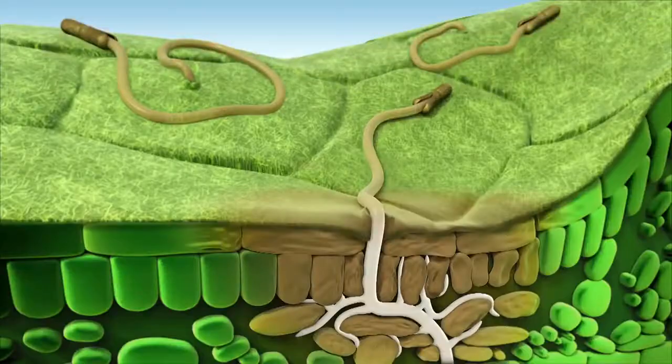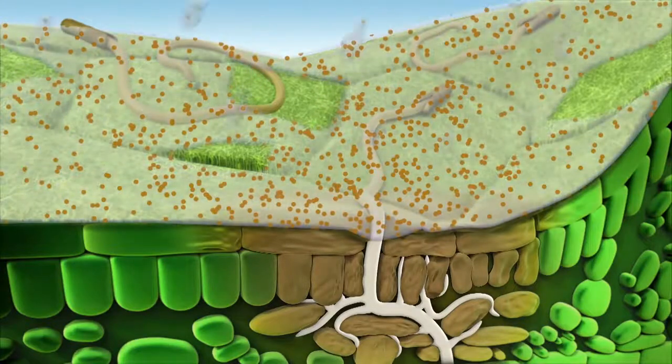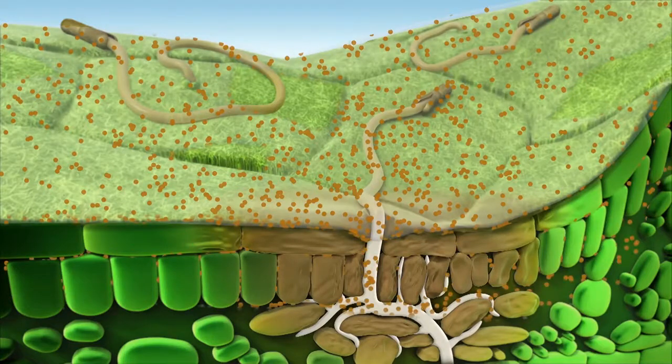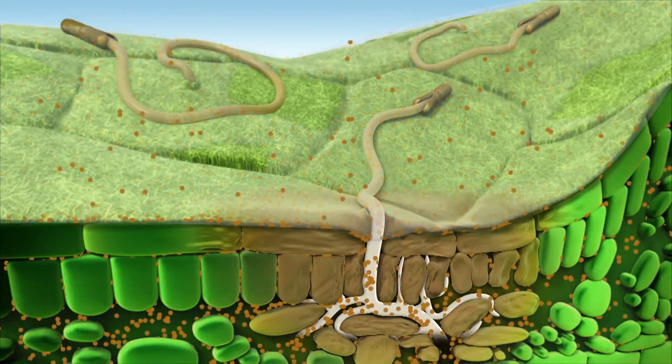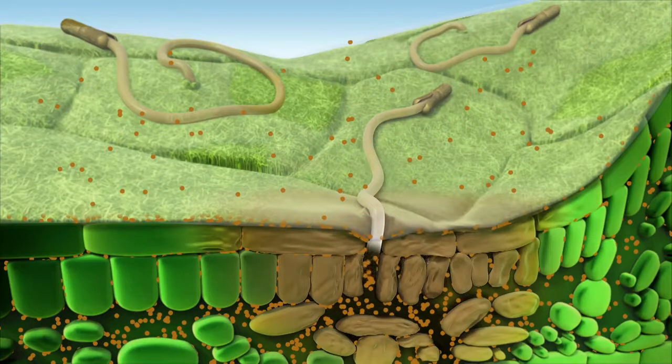Triazoles are single-site chemistry but are locally systemic and more mobile in plant tissues than other fungicides. Following application, the active ingredient is readily taken up by the leaves and moves within the leaf where it inhibits the production of the disease and actively stops production of new fungi spores.